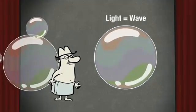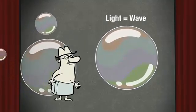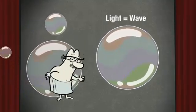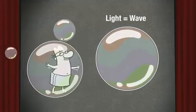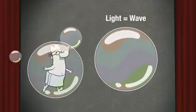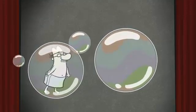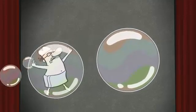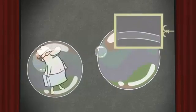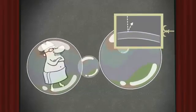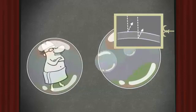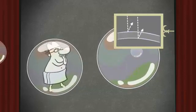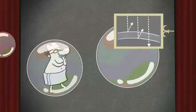Light is a wave, and different color light waves have different wavelengths. When a light wave hits the surface of a translucent film, some of it is reflected off the upper surface, some is reflected off the bottom surface, and the rest passes right through.